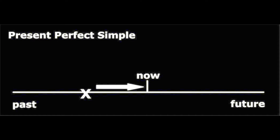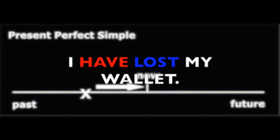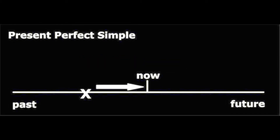Okay. As we see the timeline, we can understand that the action got started in the past, but the result happened in the present. So, when I say 'I have lost my wallet,' it means right now I haven't got it anymore and it's not here.